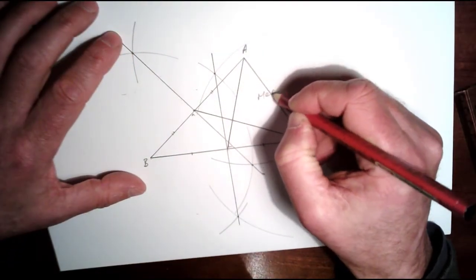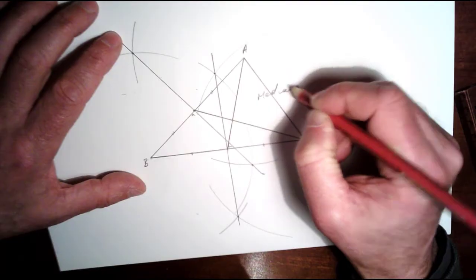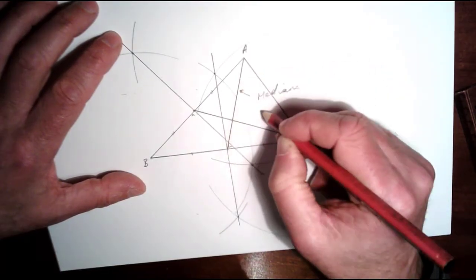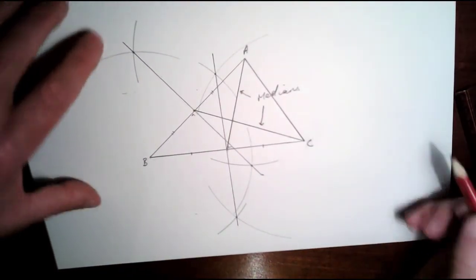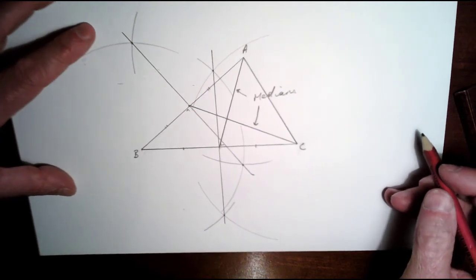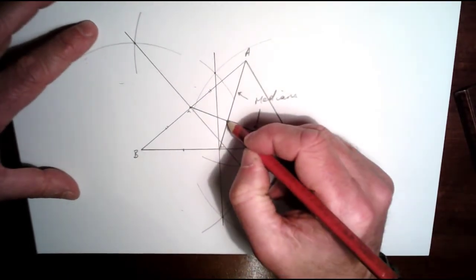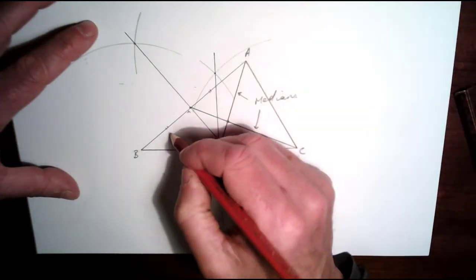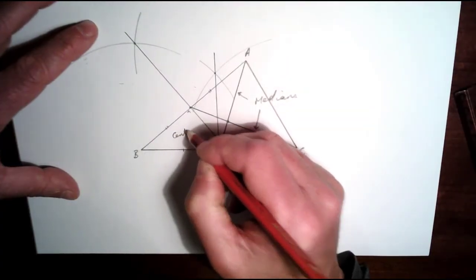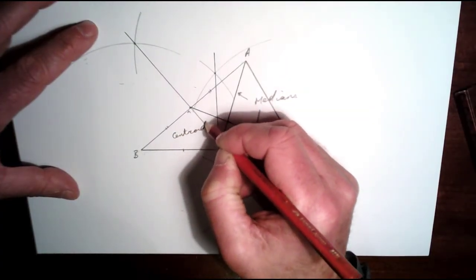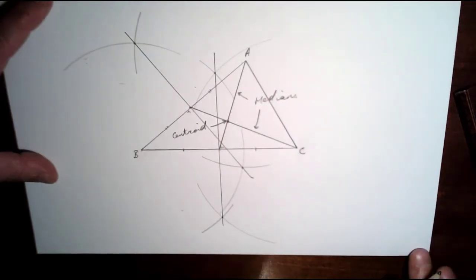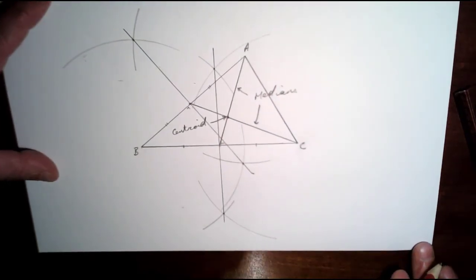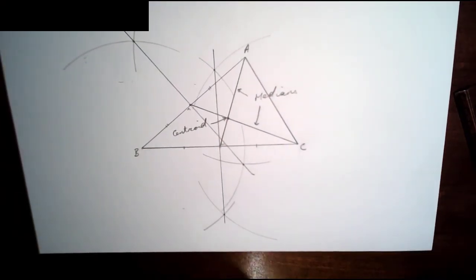So I've constructed two medians. Our centroid — the center of gravity of our triangle — is this intersection point here. This is our centroid, and that's it for this construction.